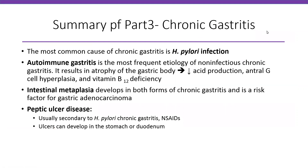Summary of part three — chronic gastritis: the most common cause is H. pylori infection. Autoimmune gastritis is the most frequent etiology of non-infectious chronic gastritis, resulting in atrophy of the gastric body, decreased acid production, antral G-cell hyperplasia, and vitamin B12 deficiency. Intestinal metaplasia can develop in both forms and is a risk factor for gastric adenocarcinoma. Autoimmune gastritis can lead to neuroendocrine tumors. Peptic ulcer disease is usually secondary to H. pylori or NSAIDs, and ulcers can develop in the stomach or duodenum.